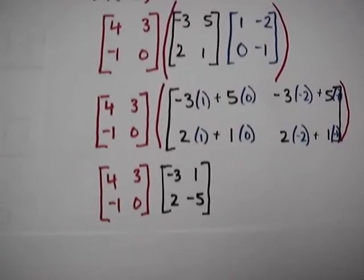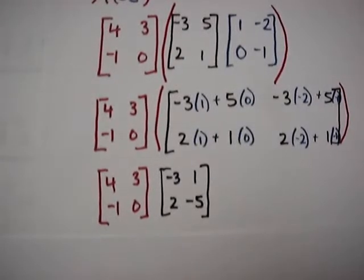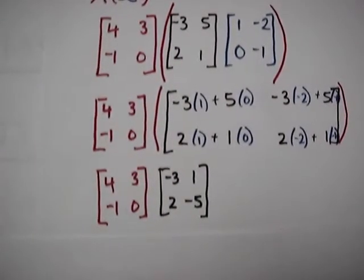Negative 3 times negative 2 is positive 6, plus 5 times negative 1 is negative 5, so it becomes a 1.